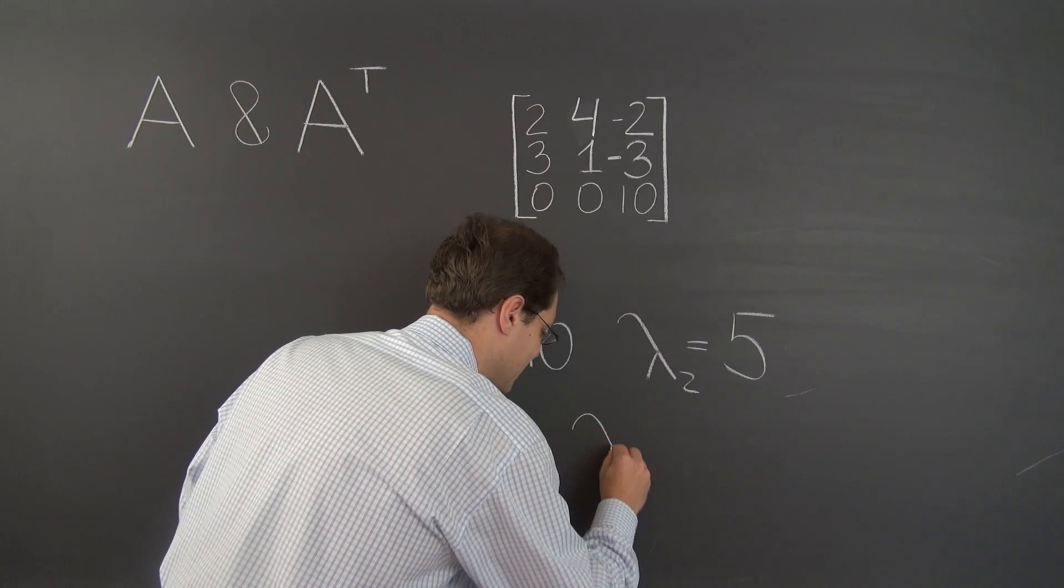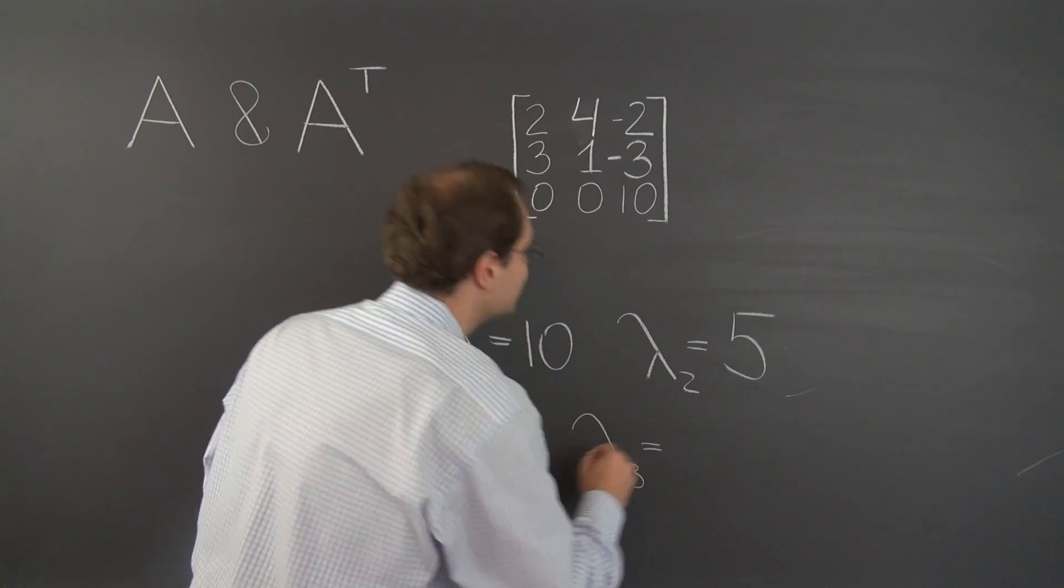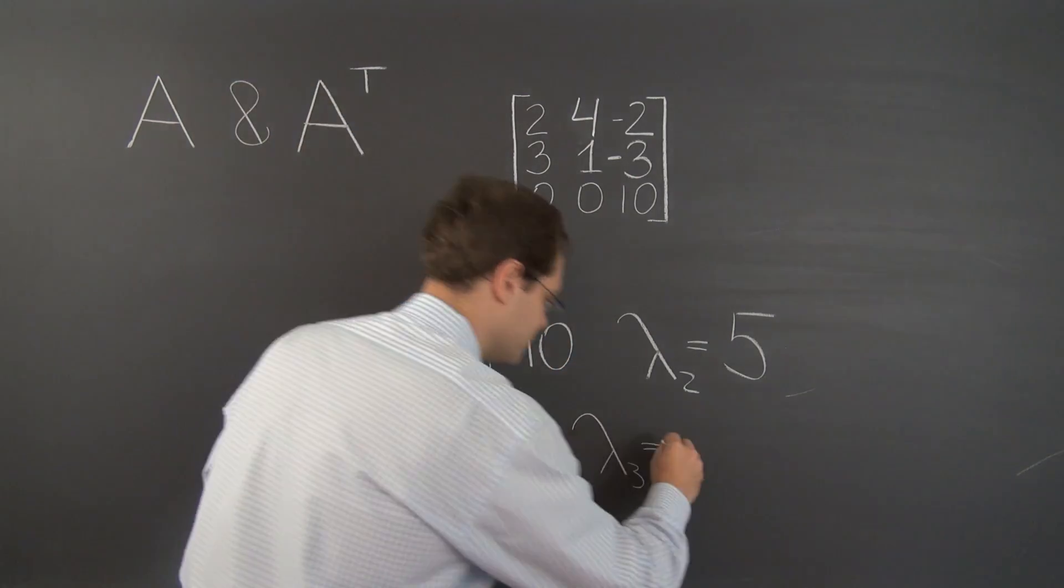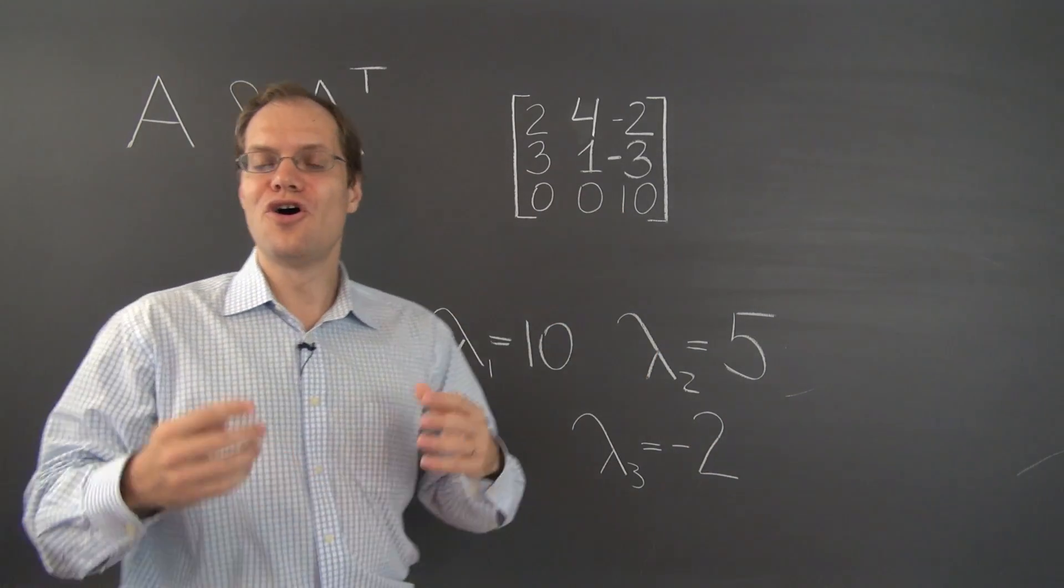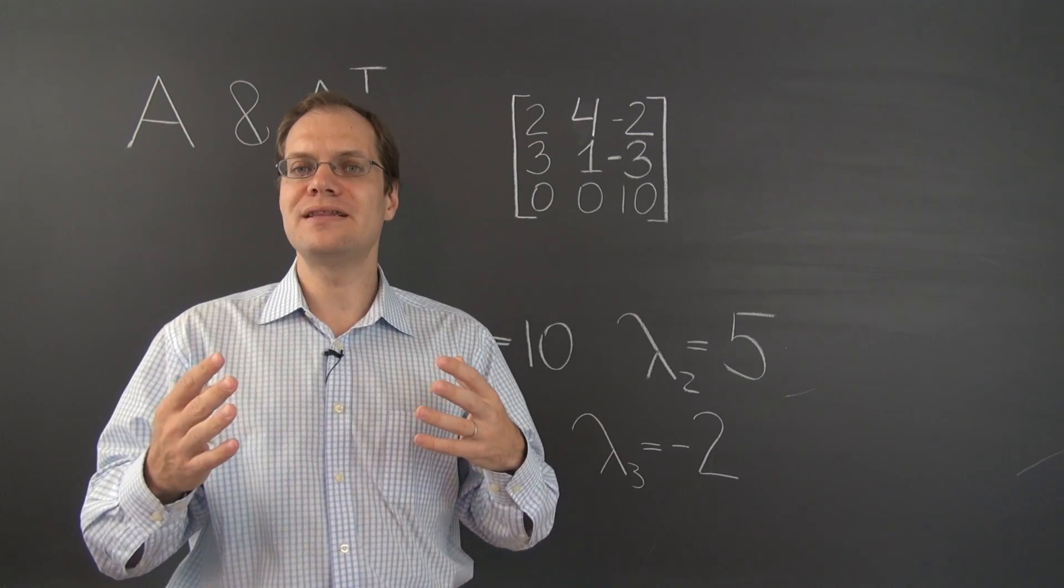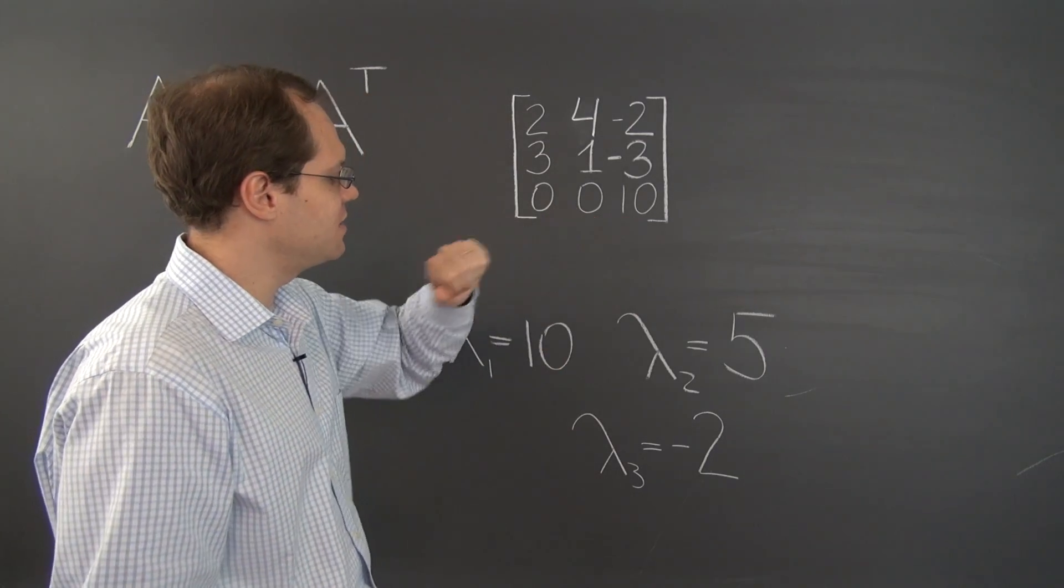So the remaining eigenvalue, lambda 3, must be negative 2. And there you go. We have just determined all of the eigenvalues, but none of the eigenvectors of this matrix.